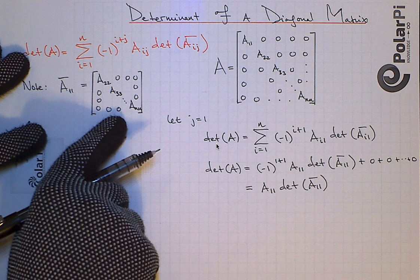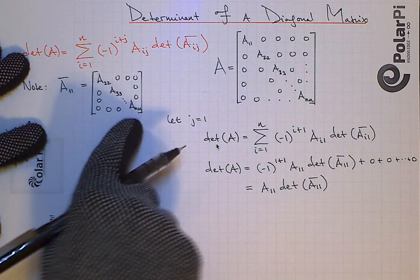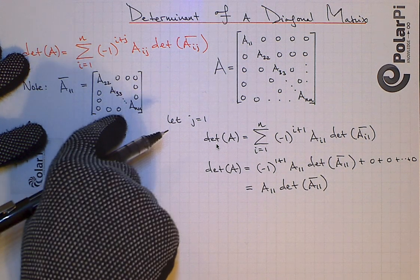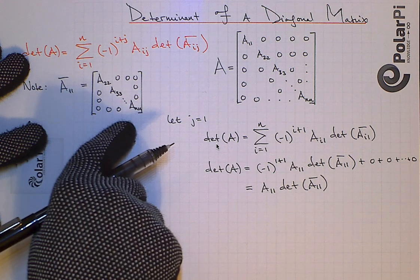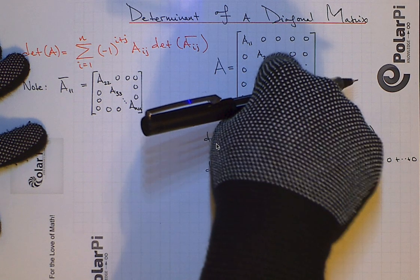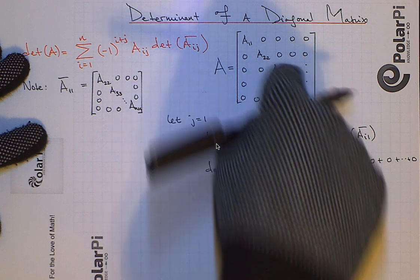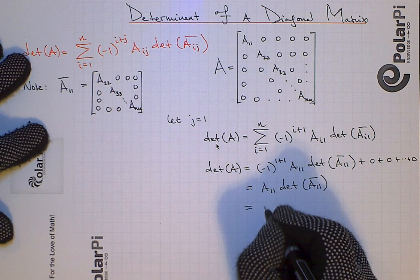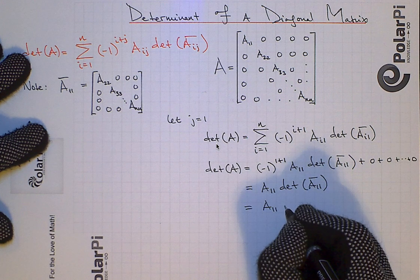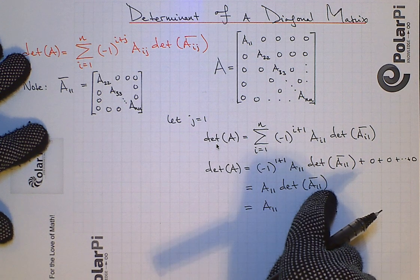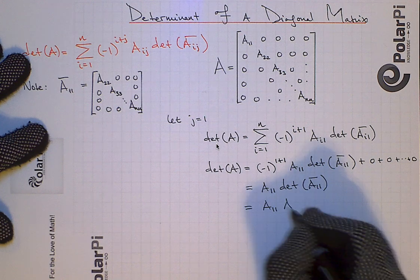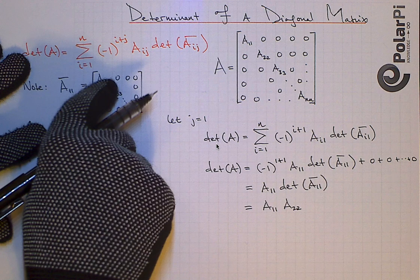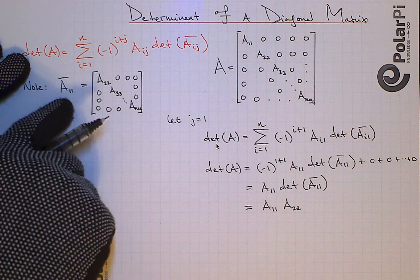So now, what we have to do is find the determinant of A11 bar. So find the determinant of this diagonal matrix, and this diagonal matrix is like n minus one by n minus one. So basically, we're gonna do exactly what we did with this matrix A to start to find the determinant of A11 bar. And when we do, as you can imagine, what we're gonna have to write is A11, and then for the determinant of A11 bar, we're gonna be able to write A22, because A22 here is like the first entry in A11 bar in the matrix A11 bar.